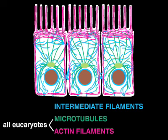Although all eukaryotic cells contain microtubules and actin filaments, intermediate filaments are found only in vertebrates and a number of other soft-bodied animals.